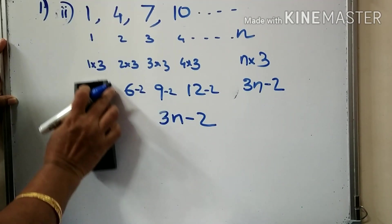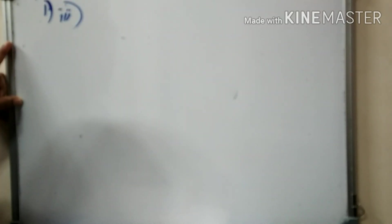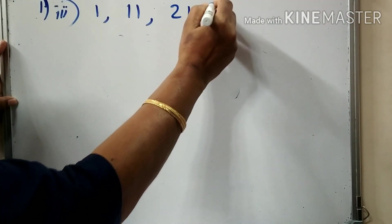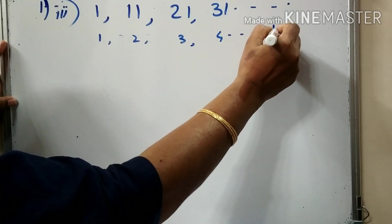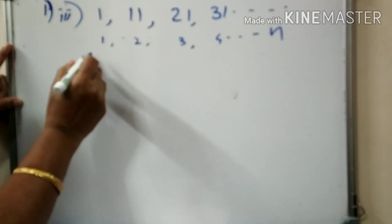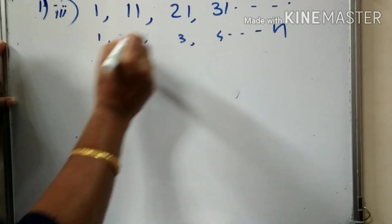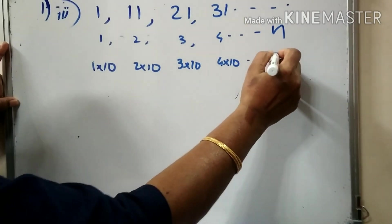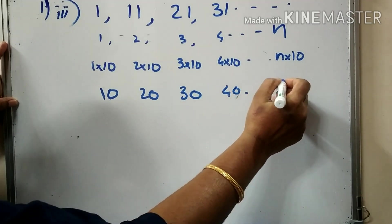The third part is the sequence of natural numbers ending in 1. Natural numbers ending in 1: 1, 11, 21, 31, etc. In this sequence, we will see the numbers ending in 1. 1 into 10, 2 into 10, 3 into 10, 4 into 10... N into 10. This gives 10, 20, 30, 40, etc. — this is 10n.